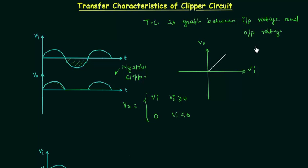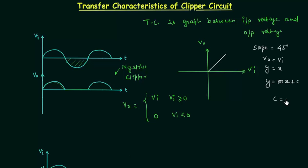Now we can easily plot the transfer characteristics. When VI is positive or greater than 0, we have a straight line with slope equal to 45 degrees, because VO is equal to VI. This means Y is equal to X. Relating to the straight line equation Y equals MX plus C, where C is the intercept equal to 0 and M is the slope equal to 1, meaning tan(θ) equals 45 degrees.